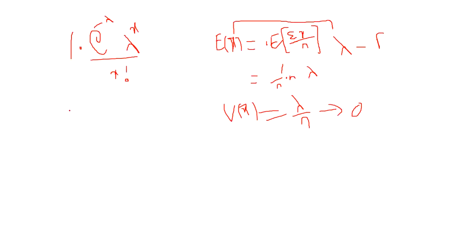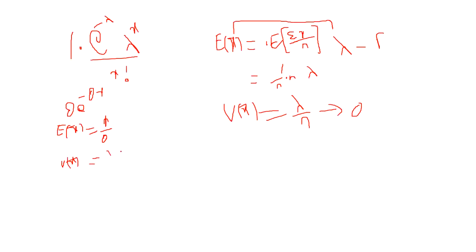Another example: exponential distribution with PDF θ·e^(−θx). For x̄, E[x̄] = 1/θ, so x̄ is unbiased. The variance of x̄ = 1/(θ²n), which tends to 0 as n → ∞. So x̄ is a consistent estimator for 1/θ in the exponential distribution.